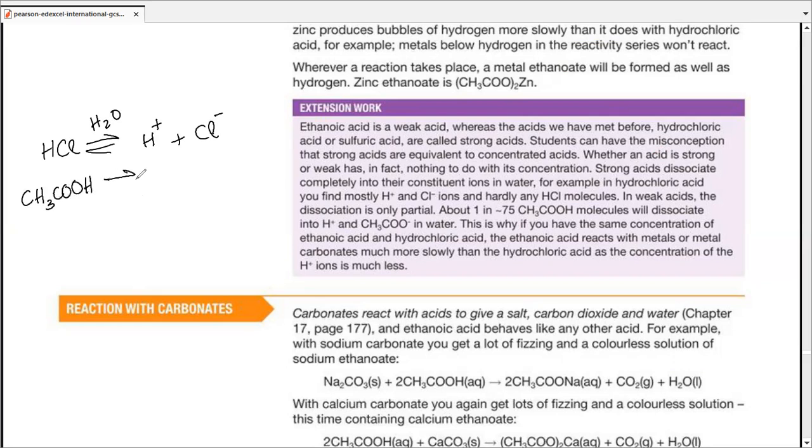The important point here is that H+ and Cl- ions are completely dissociated and we hardly have these molecules. If we consider 75 atoms, 75 out of 75 would dissociate.